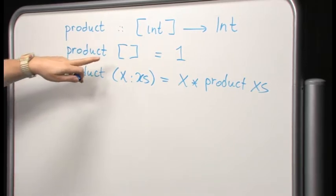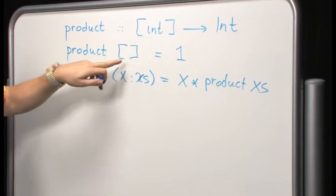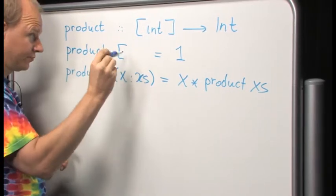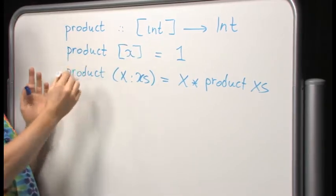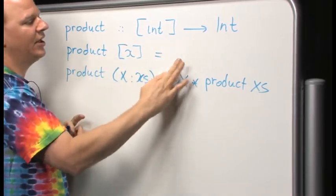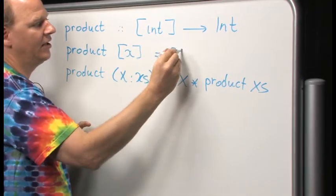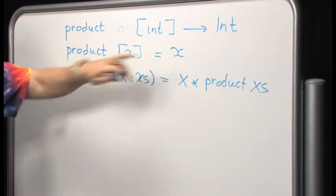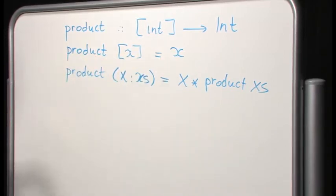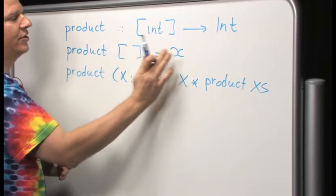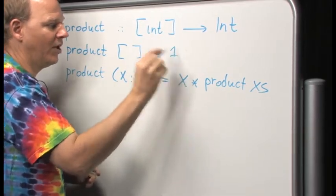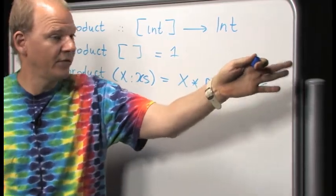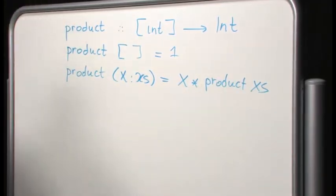If you don't like the product of the empty list being 1, you could make it a partial function not defined on empty lists — requiring at least one element where the product of a singleton is the element itself. But I think it's convenient to say the product of the empty list is 1, so when the recursion ends, it ends with times 1 and everything is fine.